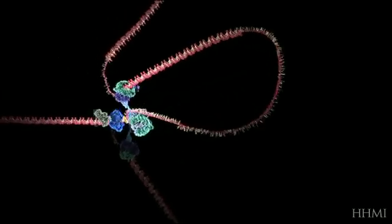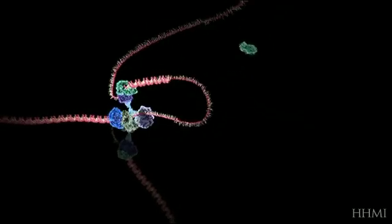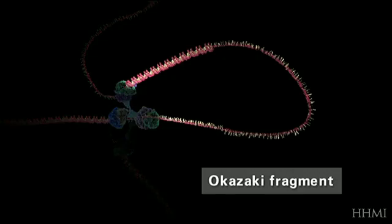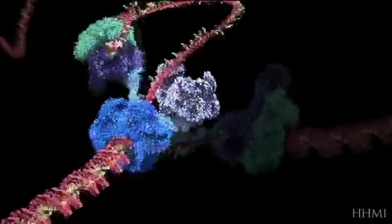As it emerges from the helix, the lagging strand is organized into sections called Okazaki fragments. These are then presented to a second DNA polymerase enzyme in the preferred 5' to 3' orientation.